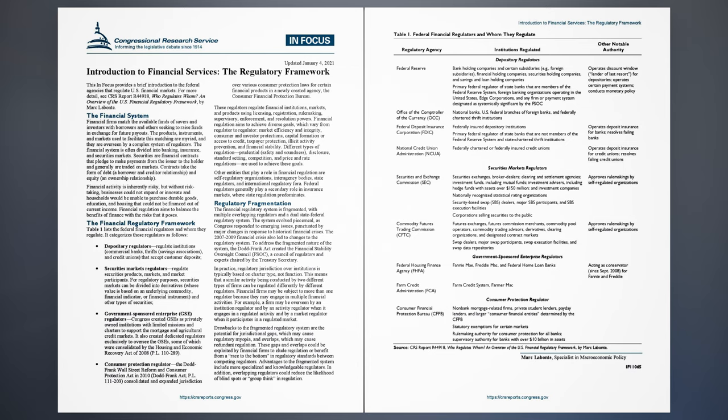Consumer Protection Regulator — Consumer Financial Protection Bureau (CFPB): regulates non-bank mortgage-related firms, private student lenders, payday lenders, and larger consumer financial entities as determined by the CFPB, with statutory exemptions for certain markets. It holds rulemaking authority for consumer protection for all banks, and supervisory authority for banks with over $10 billion in assets. Author: Mark Labonte, Specialist in Macroeconomic Policy.